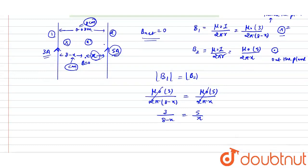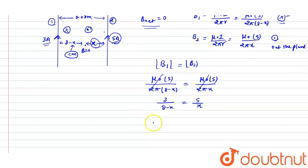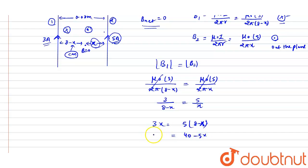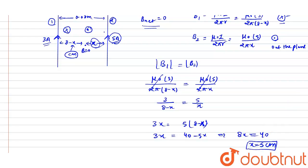Cross-multiplying: 3x = 5(8 − x), which gives 3x = 40 − 5x. Adding 5x to both sides: 8x = 40, so x = 5 centimeters.